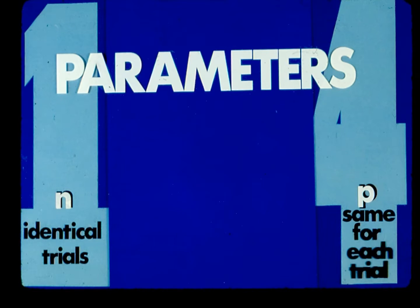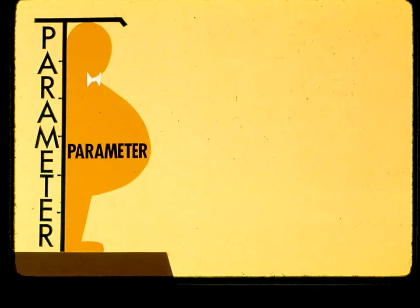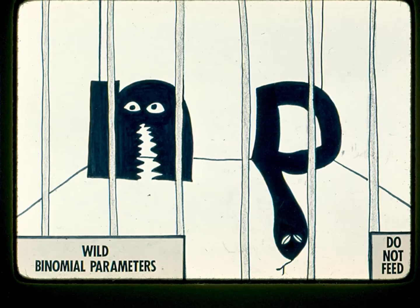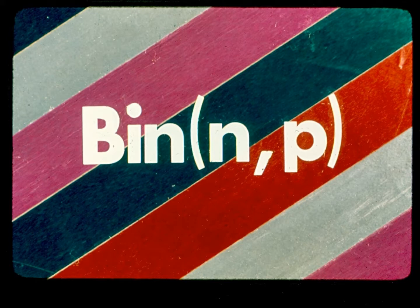To determine the specific form of a binomial distribution, we need only consider the first and last properties which concern N and P. These two terms, N and P, are called the parameters of the binomial distribution. Parameters are like height and waist measurements which identify the particular shape of a probability pattern. All distributions have parameters which must be specified to define their precise form. For all binomial variables, the parameters are N — the number of trials — and P — the probability associated with each individual trial. The usual notation is bin(N, P).